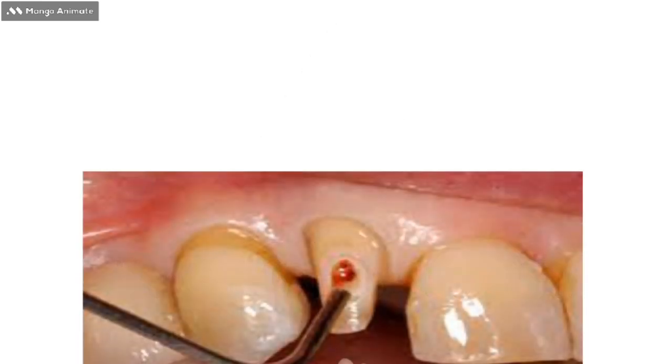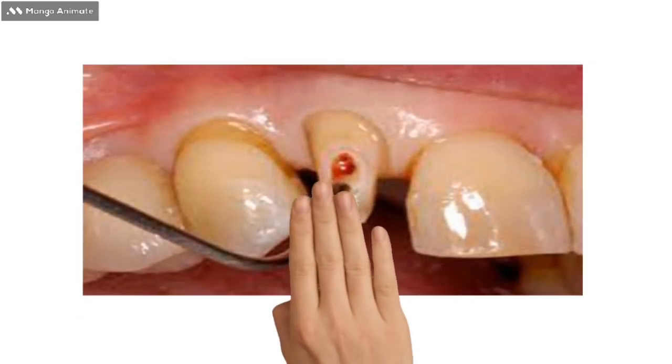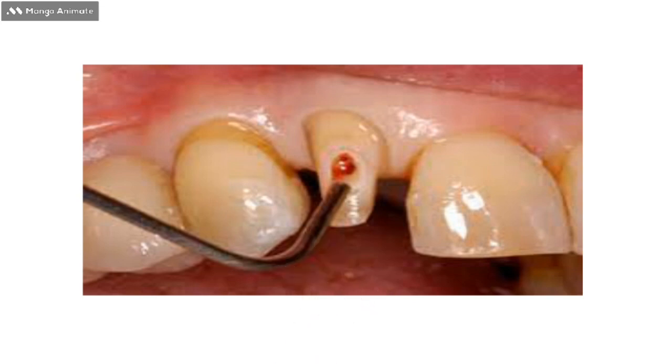If due to any iatrogenic factor the pulp gets exposed, this is what a pulp exposure looks like during a crown preparation. Here you can appreciate a red spot on the peg-shaped lateral incisor that is to be replaced by a crown.